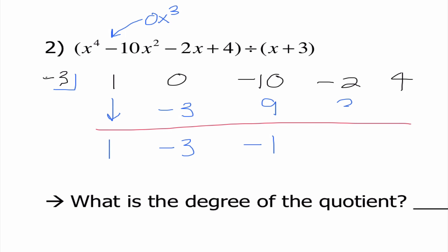Negative 1 times negative 3 is 3. When I add down that column, I get positive 1. 1 times negative 3 is negative 3. And when I add down that column, I get 1 once again.